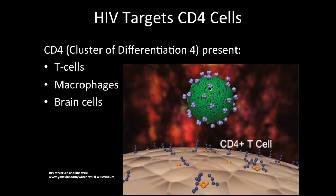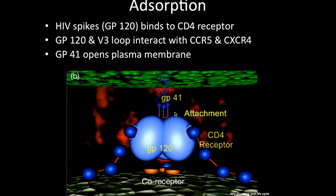The glycoprotein 120, which is the receptor spike of the HIV virus, binds to the CD4 receptor of the cell. Once it binds, another molecule called the B3 loop interacts with the co-receptors along with GP120, conformationally changing the structure of the receptor so that another receptor called glycoprotein 41 can shoot out and open a hole into the CD4 cell, allowing the HIV virus to penetrate.